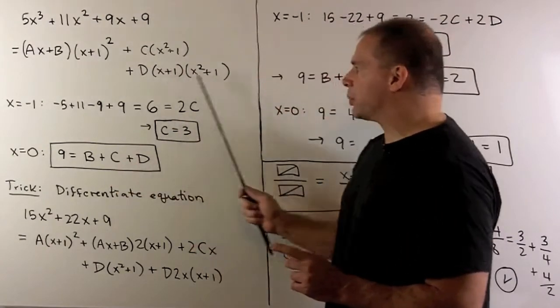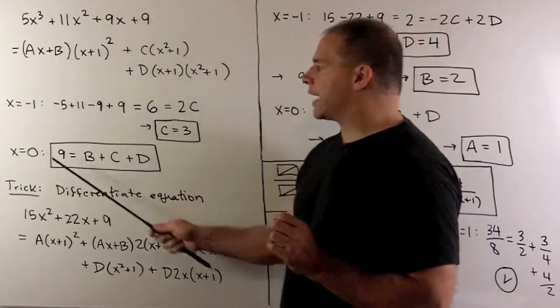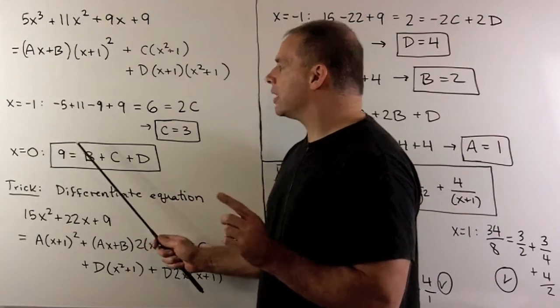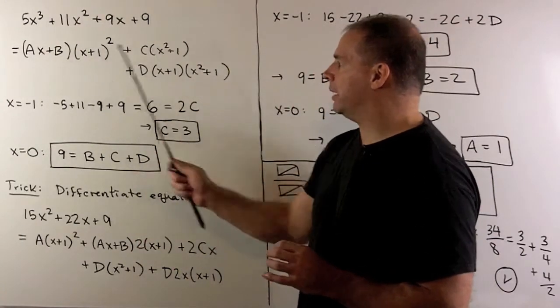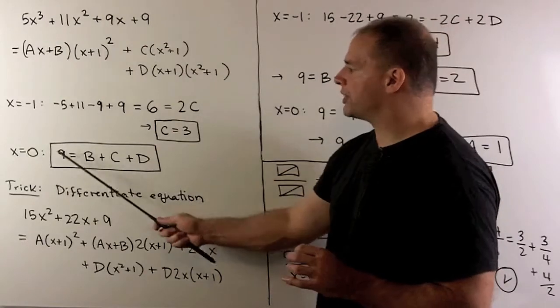Now, there aren't going to be any other obvious points to pick here. So I'm just going to go with x equal to 0. That'll give us, we'll have a 9 and then just b plus c plus d and we'll save this for later.